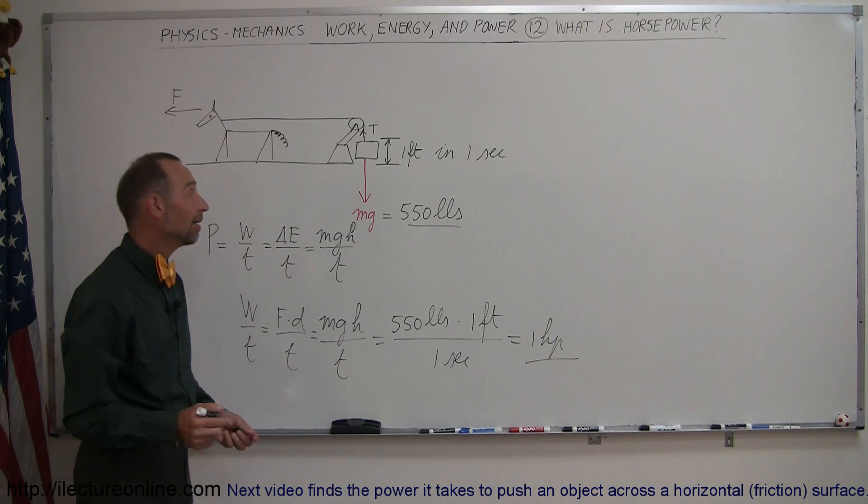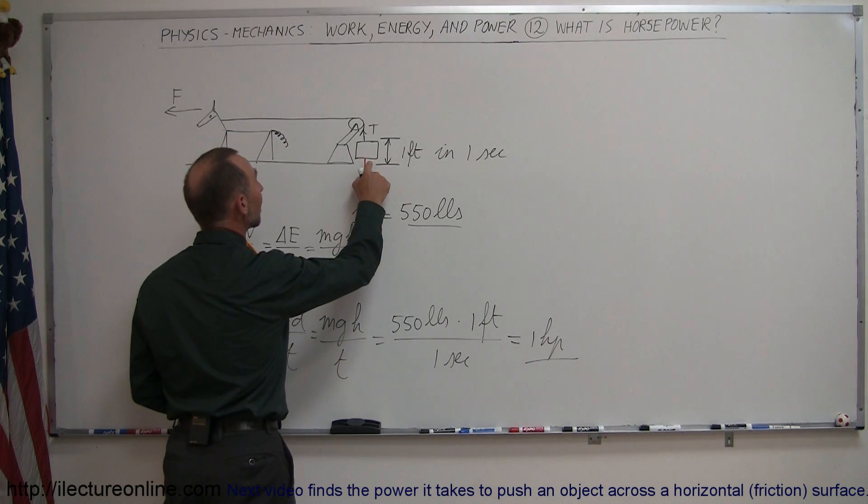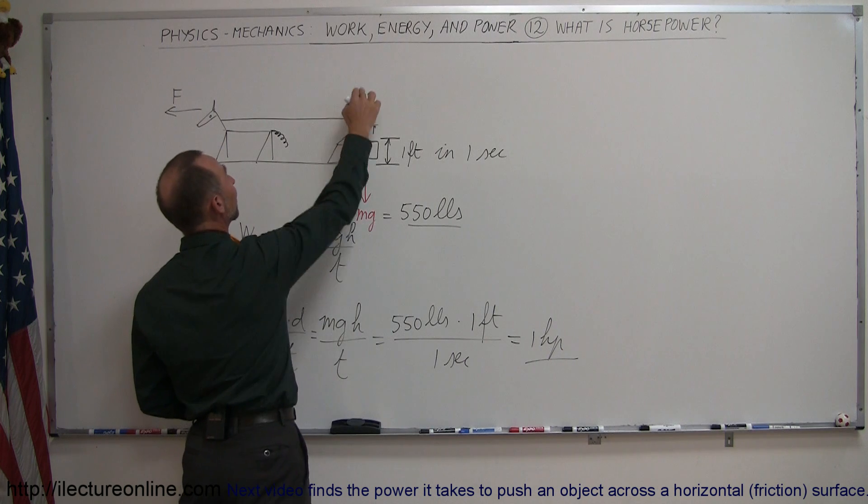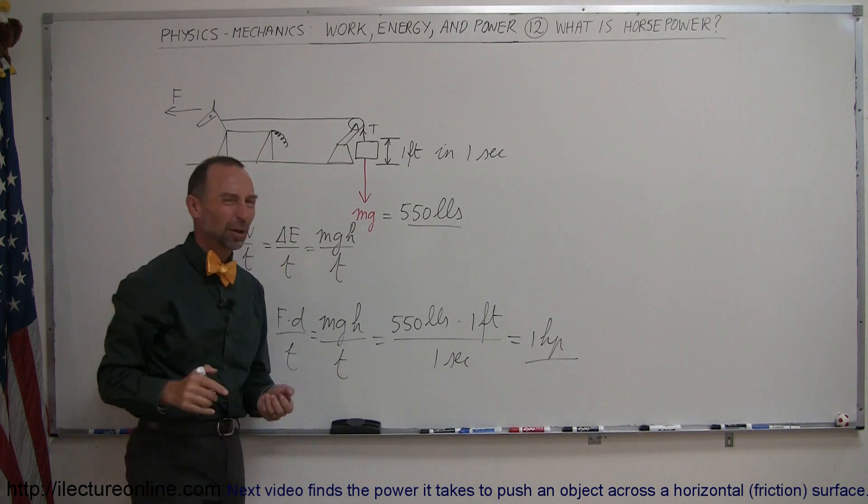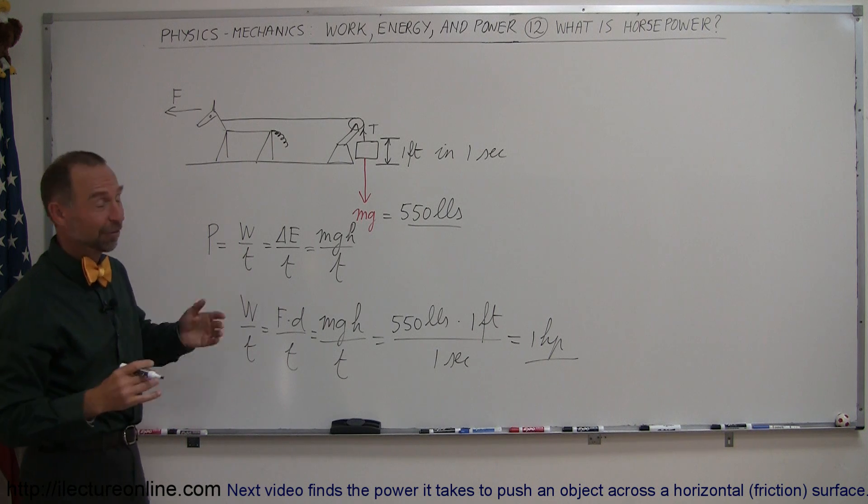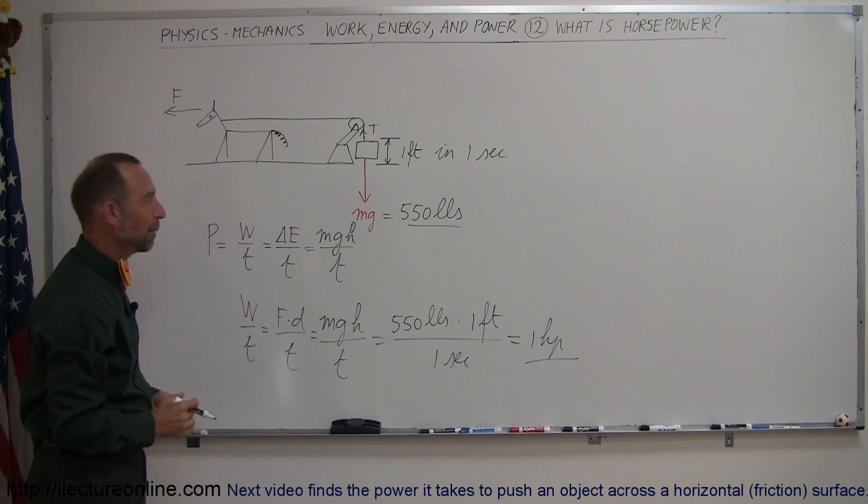Another way of looking at it is what if you put one pound there and have the horse run this way, can the horse lift it up 550 feet in one second? Of course that would be a little bit more difficult to do. I don't think the horse can quite run that fast, 550 feet in one second, so that would be the better way to do it.